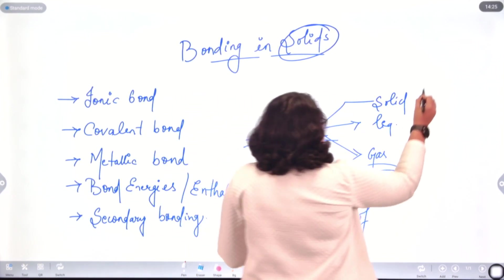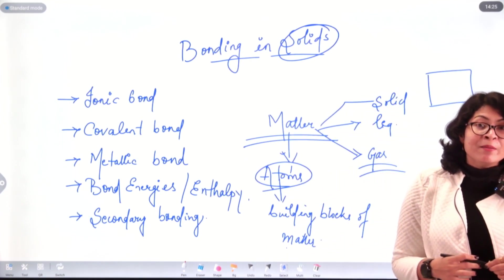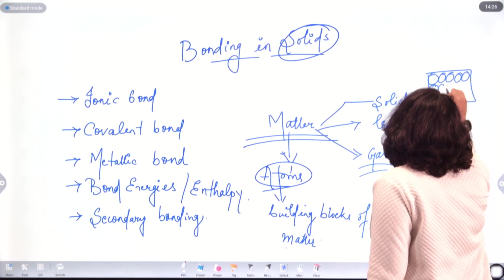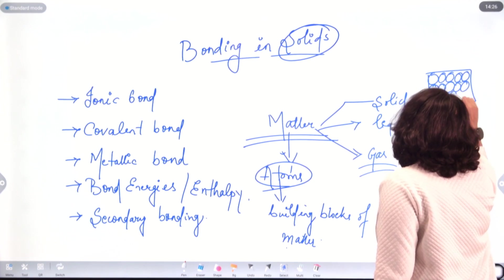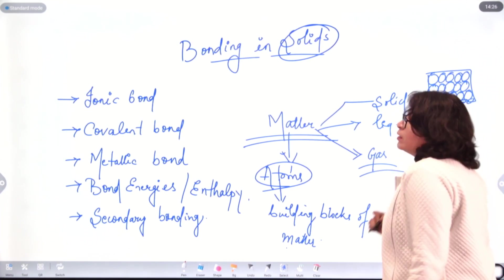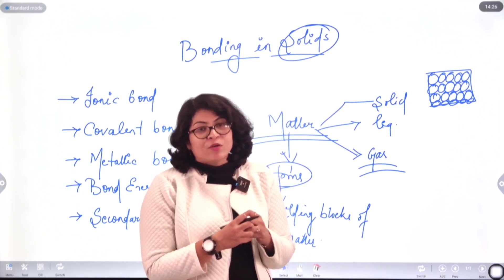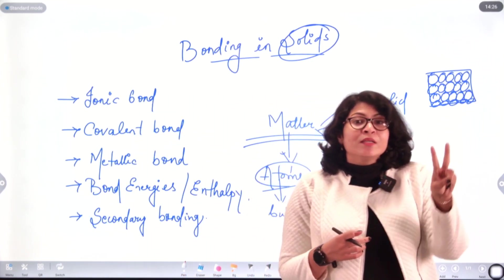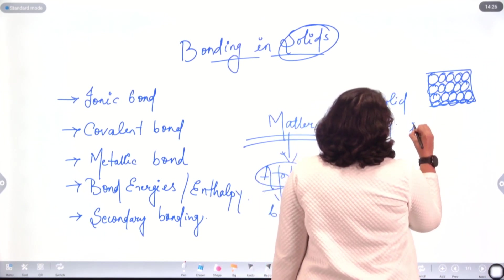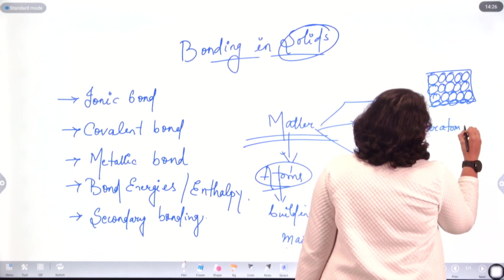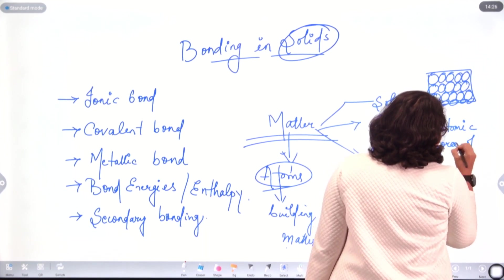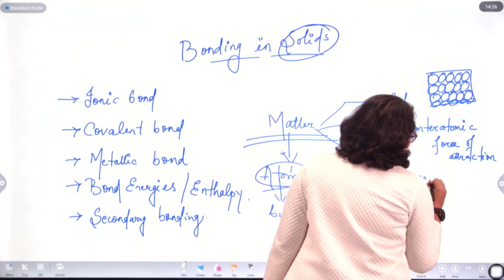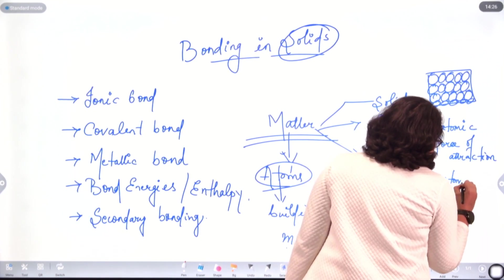In the case of solids, the building blocks are very tightly packed with each other, and they are made up of atoms. In case of solids, the atoms are arranged very tightly, in a very compact fashion. Now if the atoms are arranged very tightly, there are two key terms you need to understand: one is interatomic force of attraction, and secondly, interatomic space.